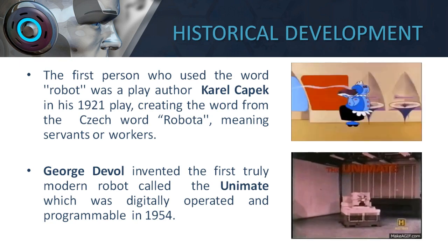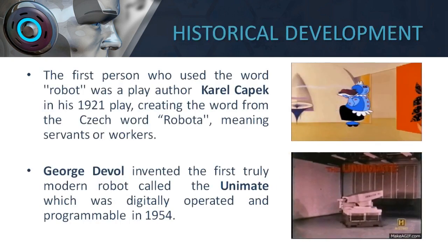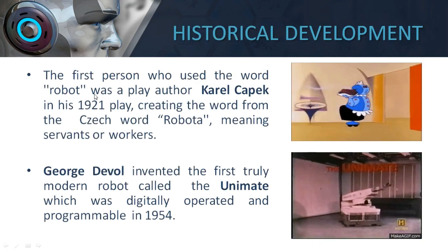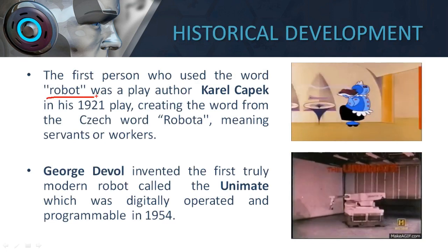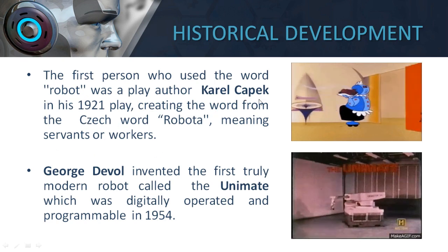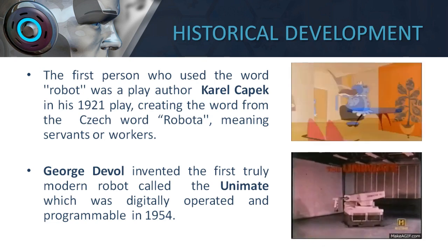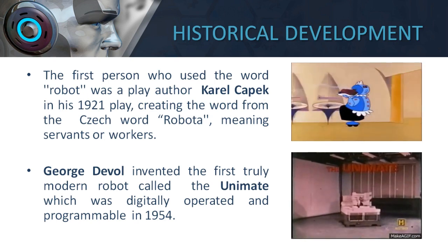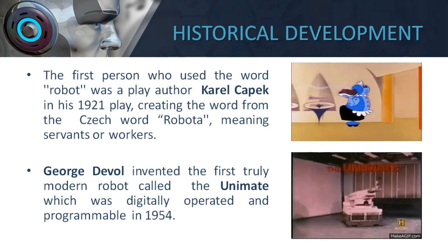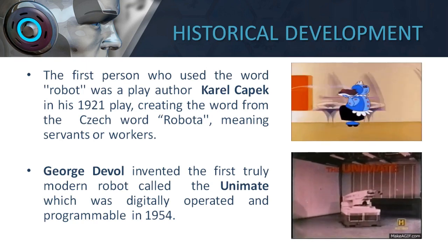The historical development of the robot dates back to 1921, when the term robot was introduced. The term was introduced in a play by an author called Karel Capek. In his 1921 play, he introduced the word 'Robota,' which is derived from a Czech word meaning servants or workers.